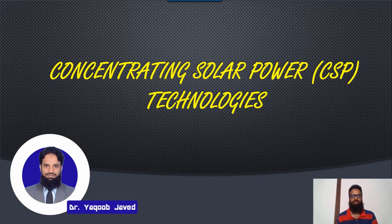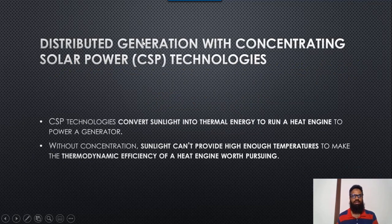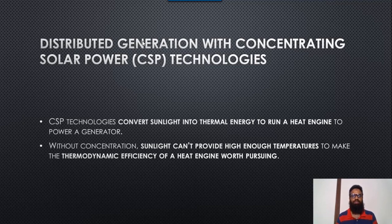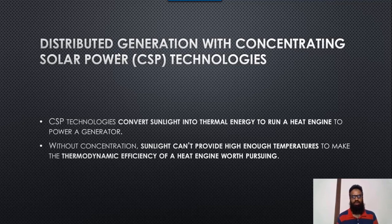So what is concentrated solar power? Concentrated solar power is basically a distributed generation technique — a technology by which we concentrate the solar light into a single point, and from that single point we produce heat, and from that heat we can produce electricity. There are two ways to use this: one is to produce heat to warm up water for water geyser applications, and the second is to concentrate heat to make steam, and from steam we can produce electricity.